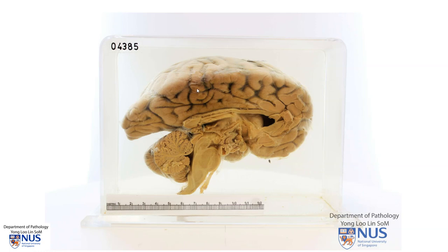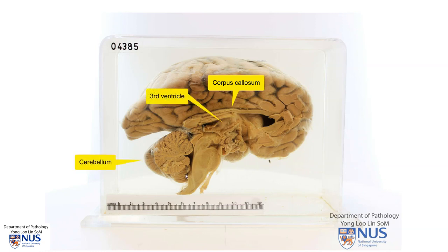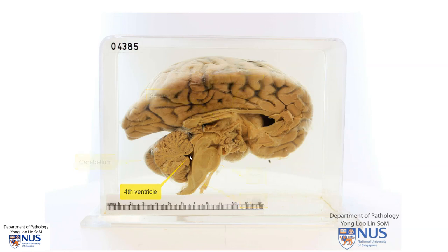We're looking here at the sagittal midline surface of the brain, and here is the cerebral hemisphere. This is the corpus callosum, the third ventricle. This is of course the cerebellum, the pons, the medulla. This is the fourth ventricle.